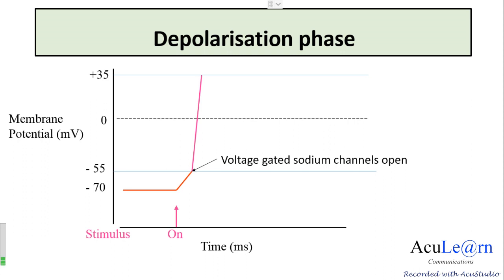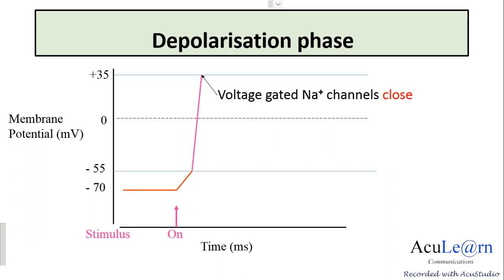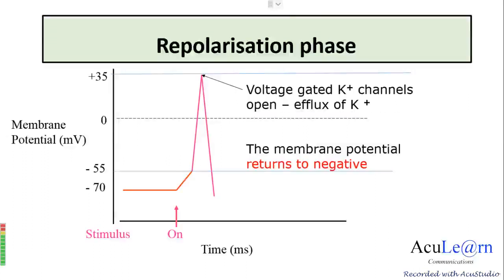At plus 35 millivolts there is no further increase in membrane potential, because the voltage-gated sodium channels close. At the same time, the voltage-gated potassium channels open. This marks the end of the depolarization phase and the beginning of the next phase of the action potential.